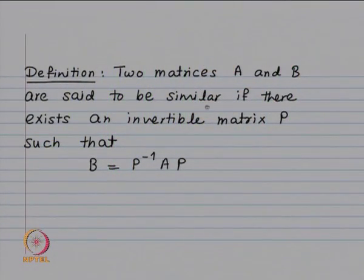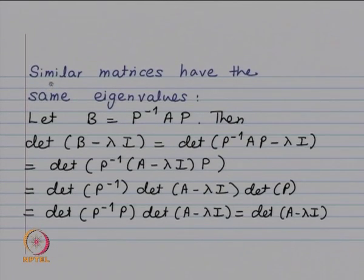We are going to show that similar matrices have the same eigenvalues by showing they have the same characteristic polynomial — since eigenvalues are roots of the characteristic polynomial. If they share the same characteristic polynomial, they share the same eigenvalues.